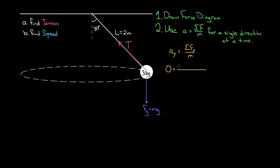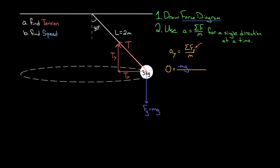One vertical force is gravity: m times g, directed downward, so it's negative. The only other force is tension, but we can't plug in the entire tension — part of it is vertical and part is horizontal. The x-component of tension points horizontally, and the y-component points vertically. We can only plug in the y-component into the vertical net force equation.